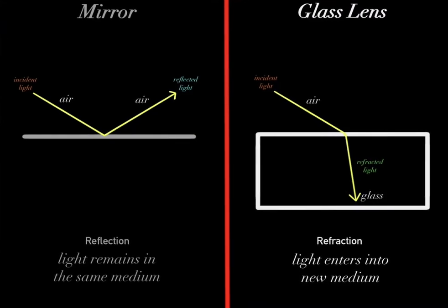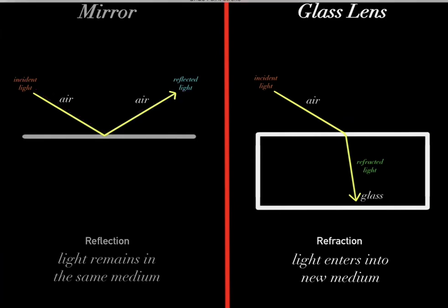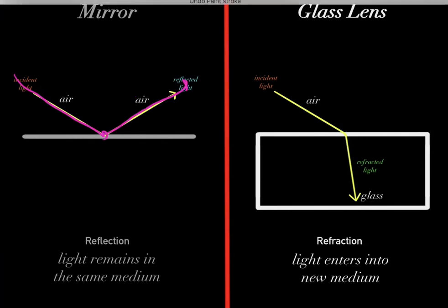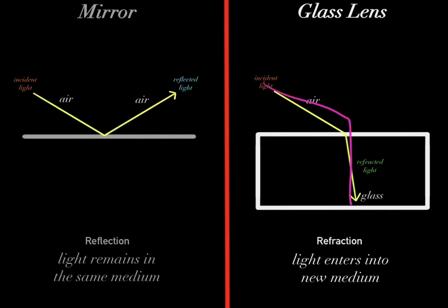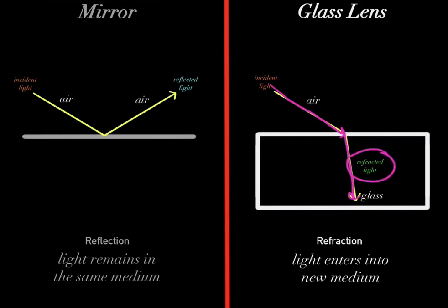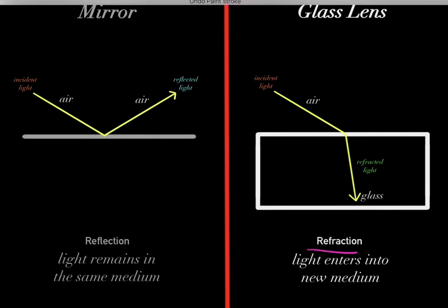This is my part two video on reflection versus refraction. I have a link to the first video below. In the first video, we learned that when light gets reflected, it begins in a certain medium and then gets reflected into that same original medium. However, in refraction, the ray of light begins in a certain medium and then gets refracted into a new medium. That's the difference between reflection versus refraction.